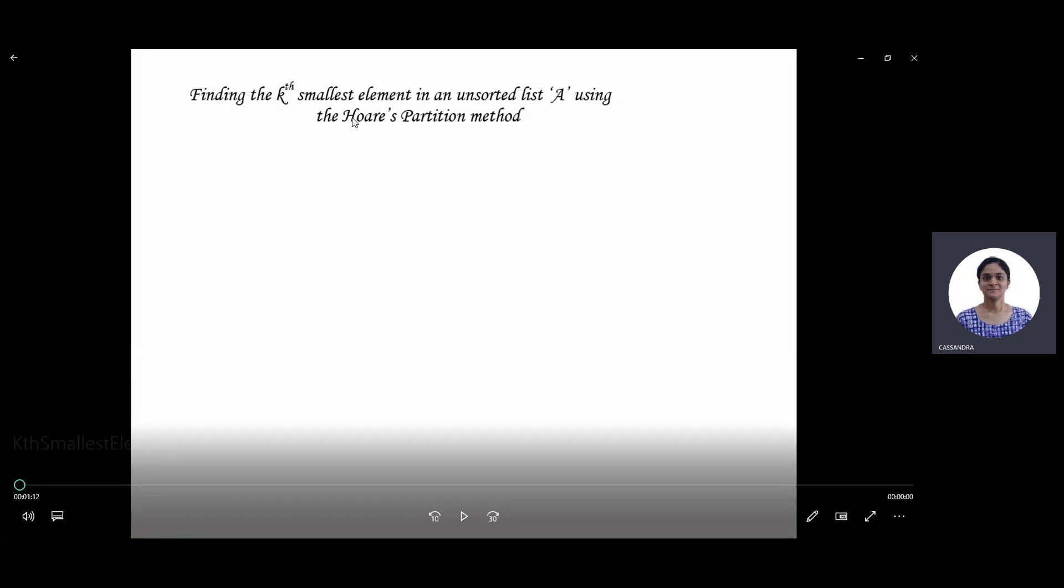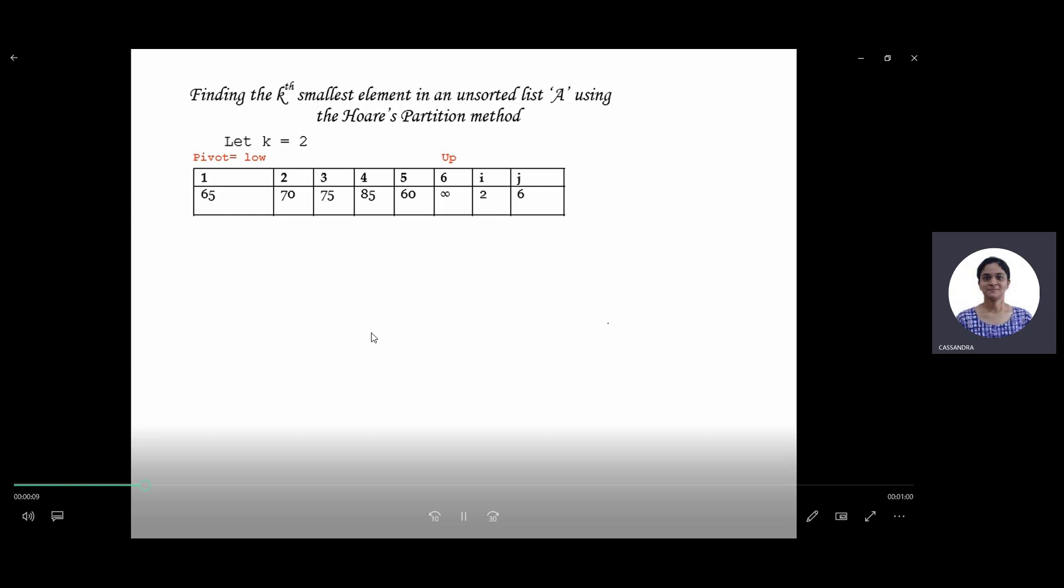In this method, we use the same algorithm that is used for quicksort. Let's take an unsorted list and assume we have to find the second smallest element in the list.